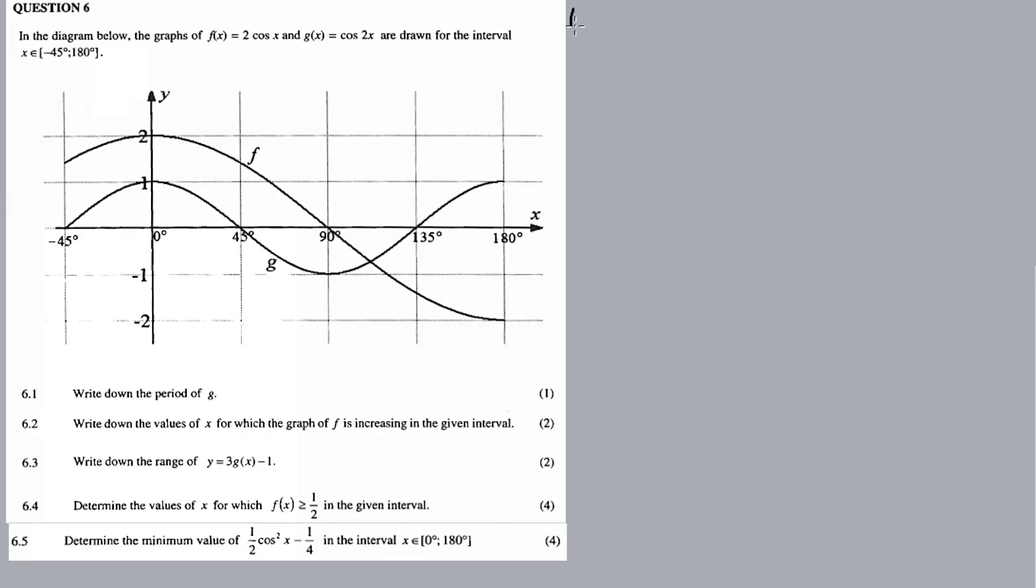6.1, it's not too silly question. Just the last question. I'm going to tell you 6.5, but I'm going to simplify this one. So 6.1, write down the period of G. I always teach this, especially when I'm going to write down the period of G.